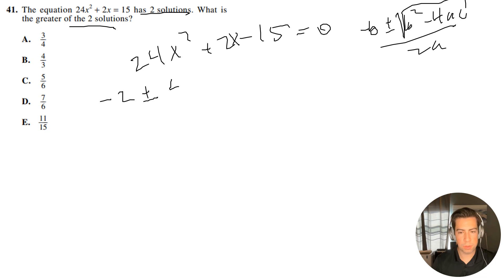plus or minus √(b², which is 4, minus 4 times a, which is 24, and c, which is -15). So all that under the square root, divided by 2 times 24, because that is our a value.